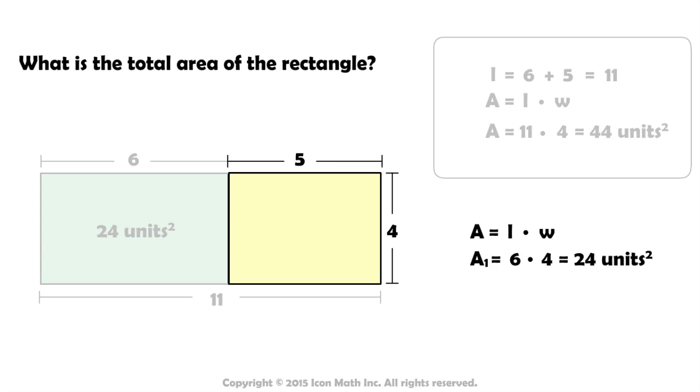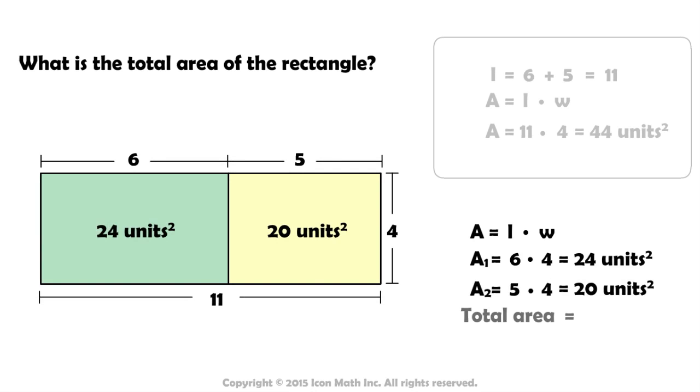The second rectangle has an area of 5 times 4, or 20 units squared. The combined areas would be 24 plus 20, or 44 units squared.